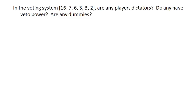Let's start with the idea of a dictator. A dictator is somebody who can make the decision all on their own. In other words, they can reach the quota, they can make the decision without anyone else's approval. In this case, all of our players have power or weight that is less than the quota, and so no, there are no dictators in this particular weighted voting system.